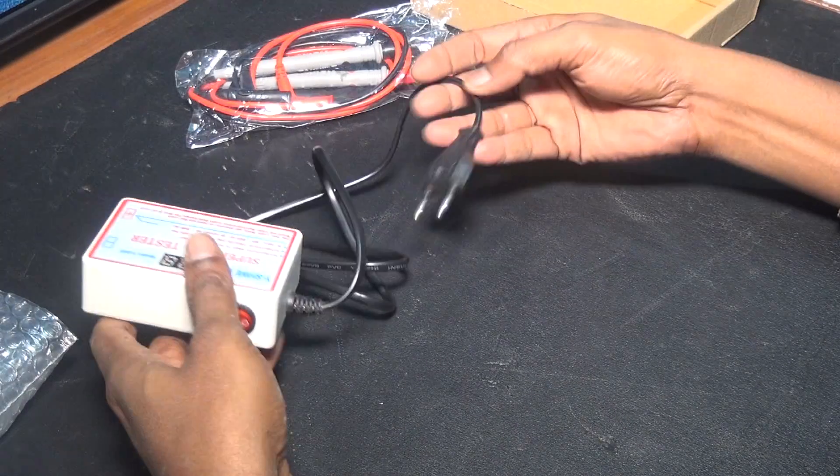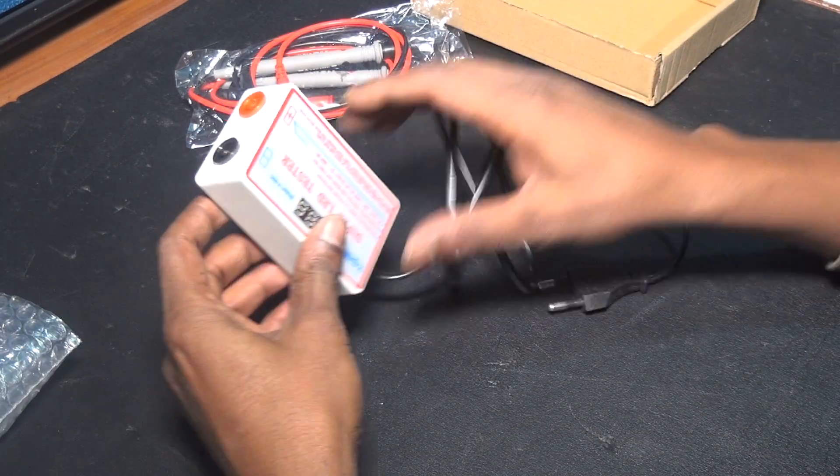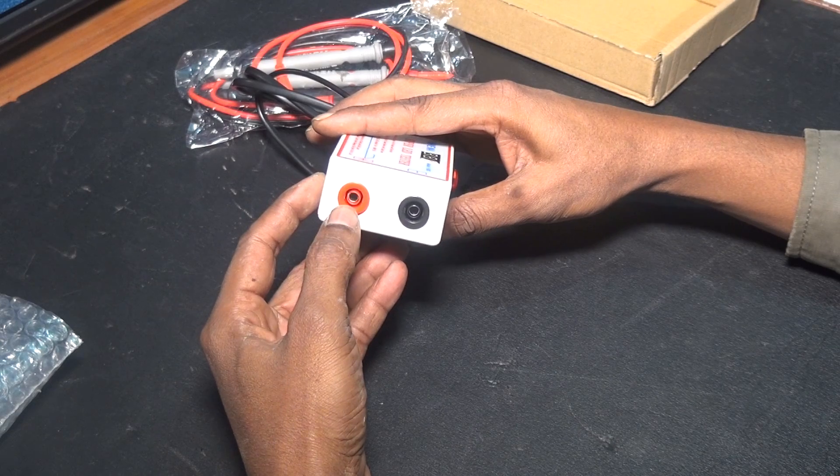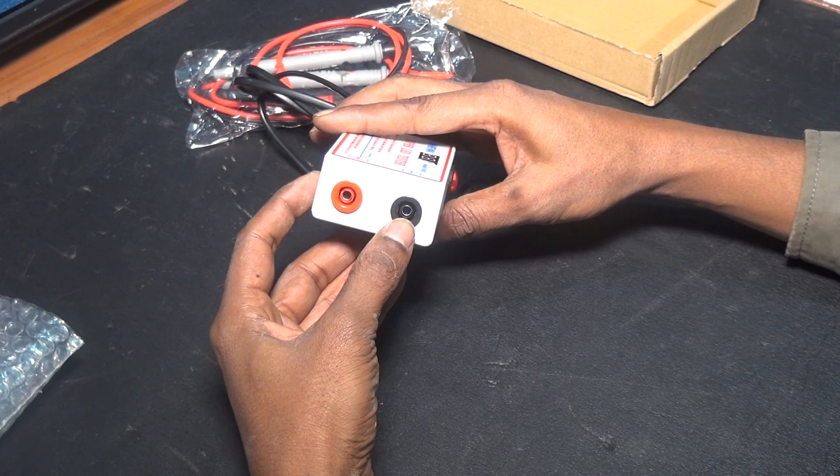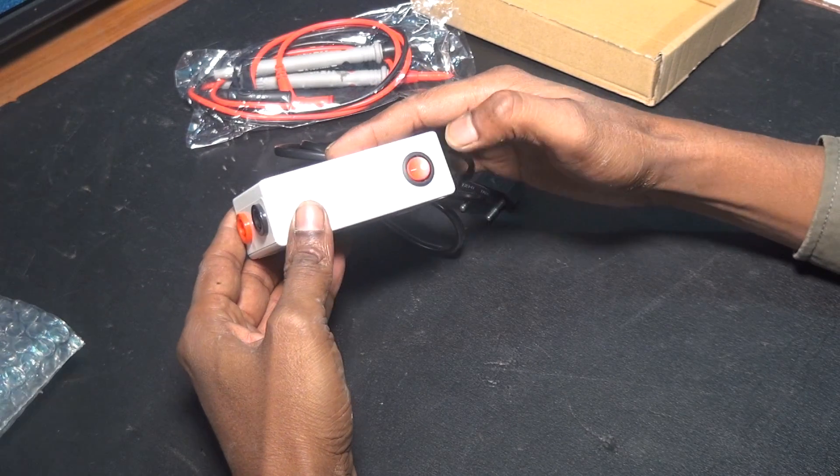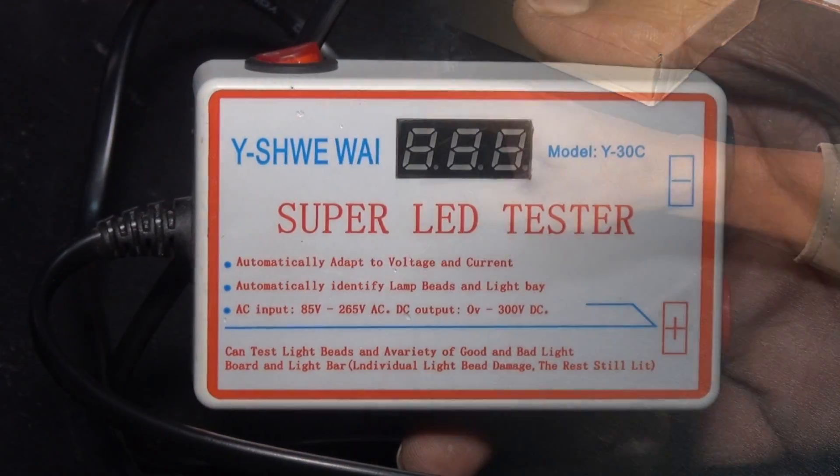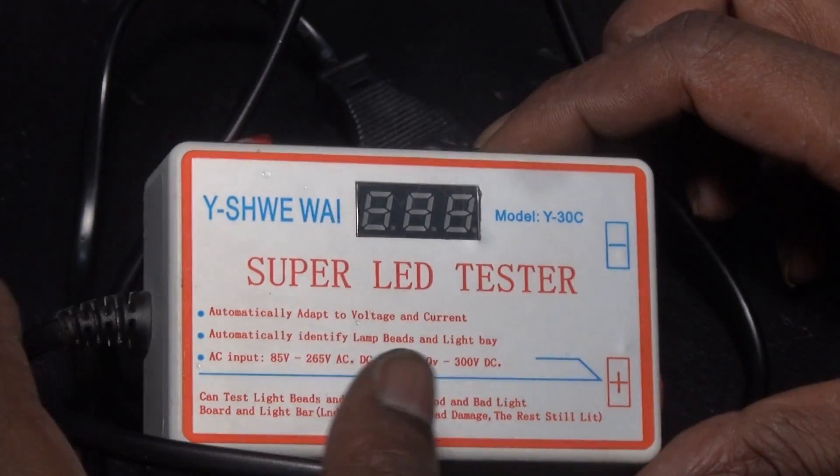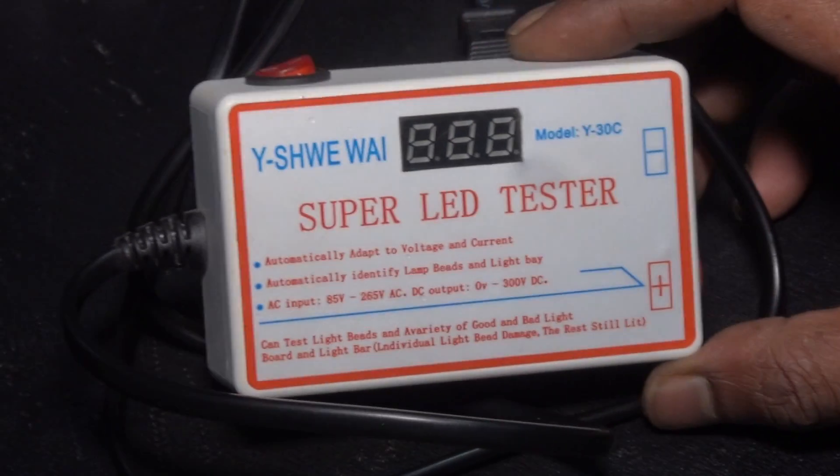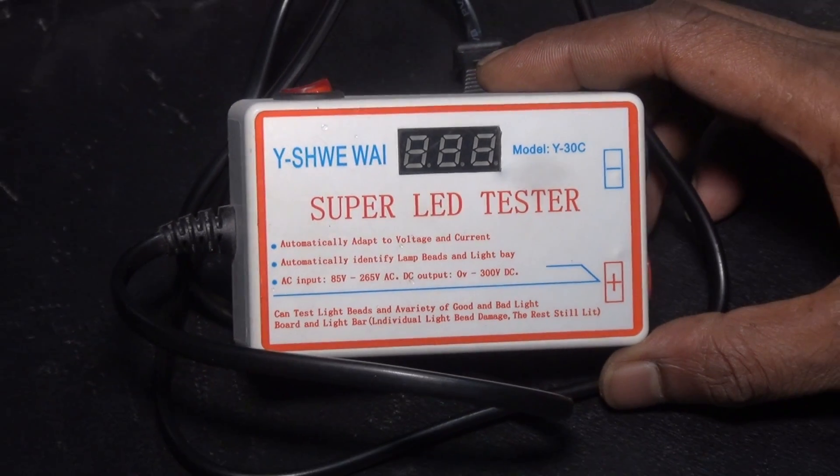Backlight tester also creates visibility of positive terminal, negative terminal, main switch, AC voltage input capacity minimum 85 volts, maximum 265 volts.